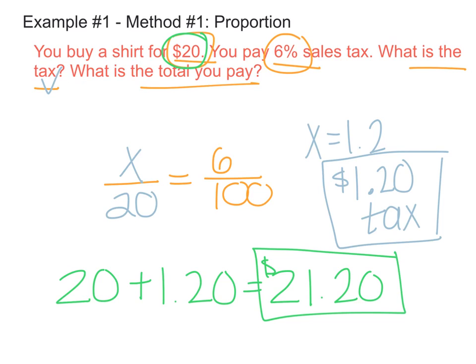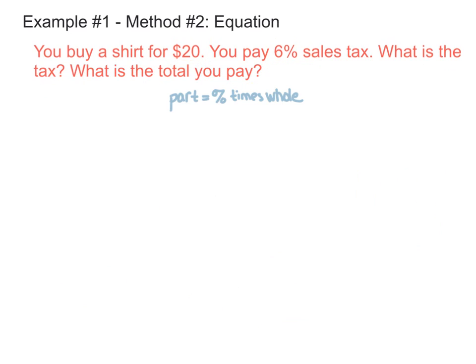So that's the first method of solving this problem. Alright, we've got the same exact problem again. Here's a different way to solve it that some of you were selecting this week in class. So the second method is using an equation. And so we're going to use this equation here knowing that the part, which is actually going to be our tax, is equal to the percent written as a decimal times the whole.